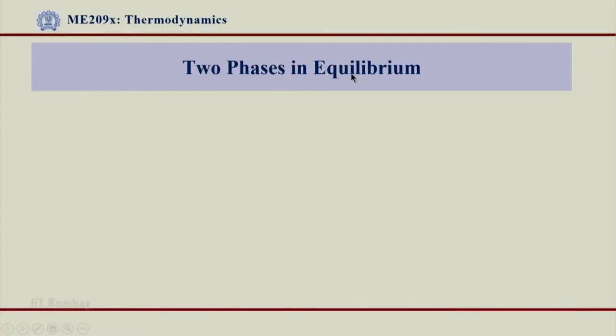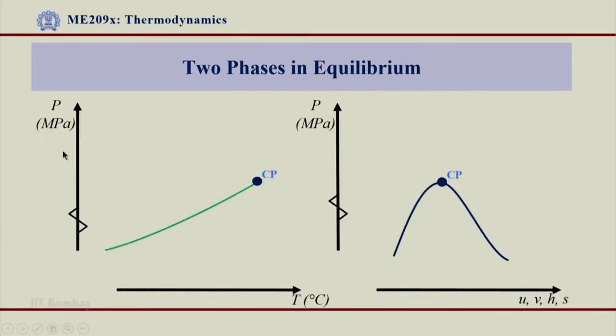Welcome back. After seeing this process, the phase change process at constant pressure, two phases in equilibrium that we saw in a PV diagram, let us have knowledge about these two phases together in equilibrium. For that, let us refer to this PT diagram and PV diagram.